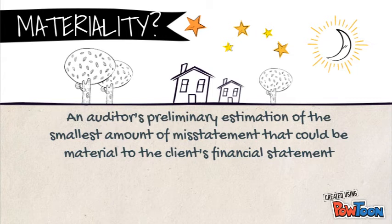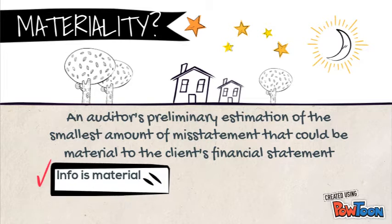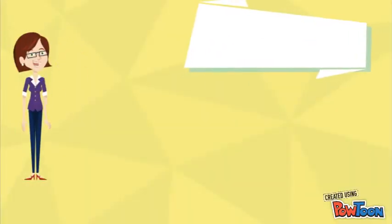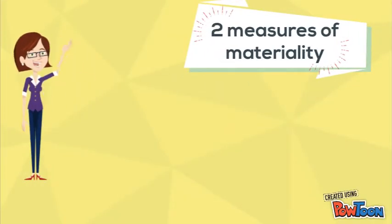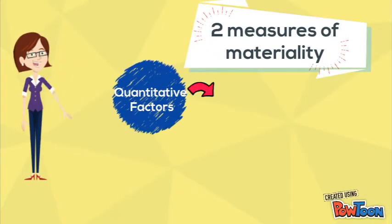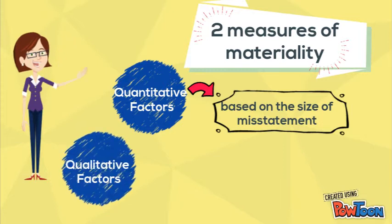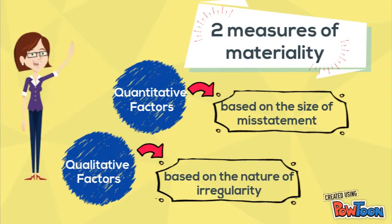The second subtopic is Materiality. What is materiality? Materiality is an auditor's professional judgment that a misstatement of information could be material to a client's financial statement. Information is material when it could influence economic decisions of users based on financial statements. There are two measures of materiality: the first is quantitative based, which is a percentage of total assets, revenue, profit before taxes, or gross profit. The second type is qualitative factors such as control weaknesses, management turnover, high fraud risk, and others.